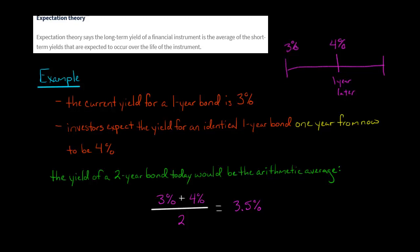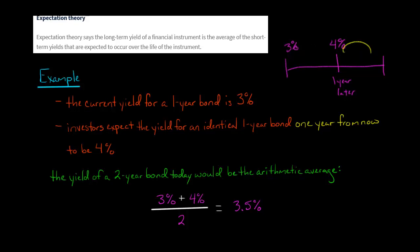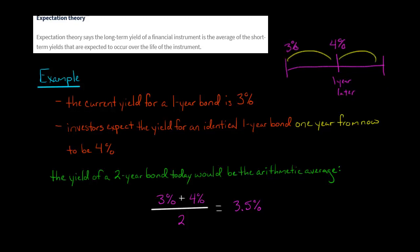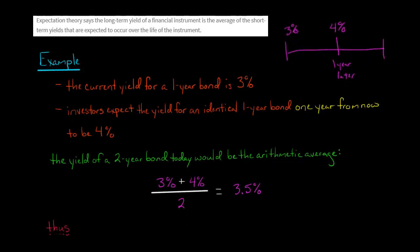So 3.5% would be the yield for a two-year bond starting right now. It would be the average of a one-year bond starting today at 3% yield, and a one-year bond starting one year from now at 4%. Add them together, take the average, and you get 3.5% as the yield for the full two-year period. So the long-term yield is the average of the short-term yields. That's expectation theory.